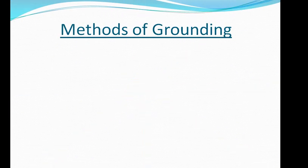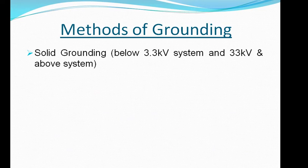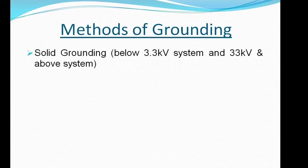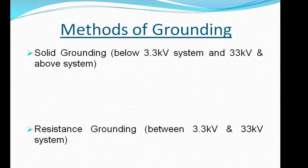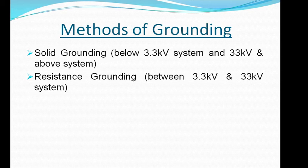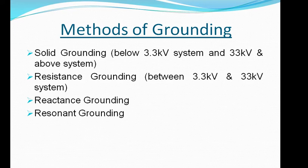Methods of grounding: there are several practices for grounding the power system network based on different voltage levels — high voltage, medium voltage, low voltage, or extra high voltage systems — and the fault current profile. Basically, there are four types of grounding methods adopted in electrical power systems. Number one is solidly grounding, used below 3.3 kV and at 33 kV and above systems. Number two is resistance grounding, used between 3.3 kV and 33 kV. Number three is reactance grounding, and number four is resonant grounding, where we use a Peterson coil or arc suppression coil.